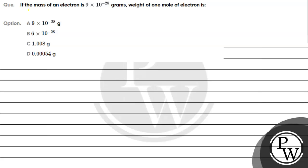Hello guys, let's read this question. The question says, if the mass of an electron is 9 into 10 raised to the power minus 28 grams, the weight of 1 mole of electrons is?